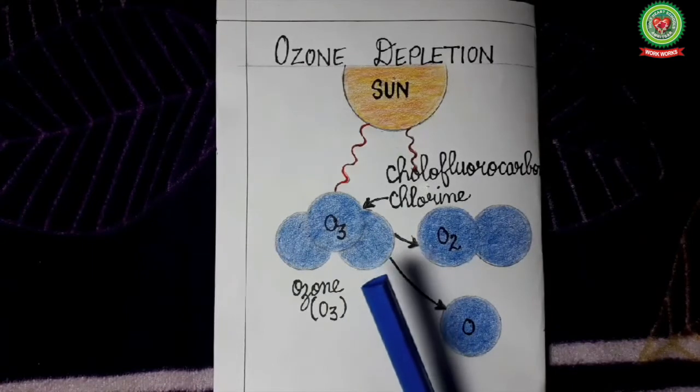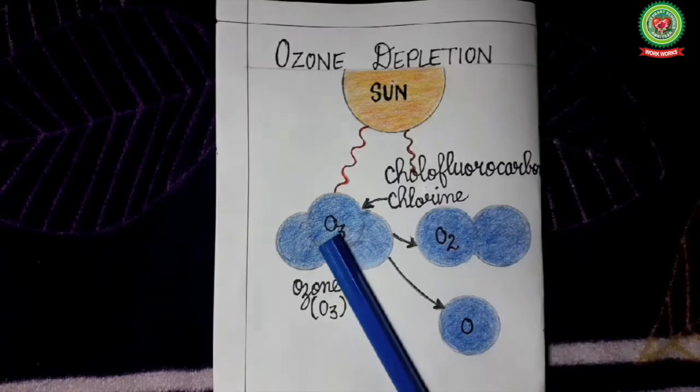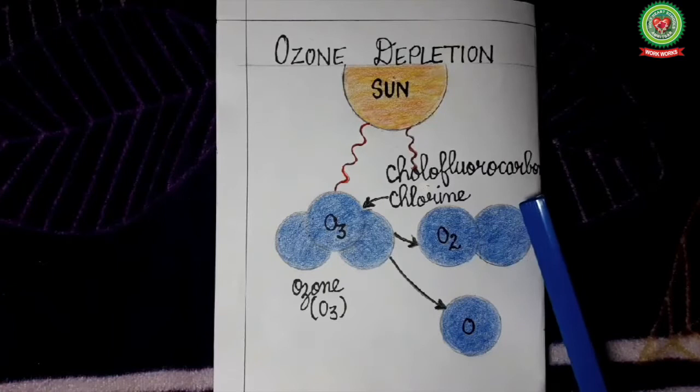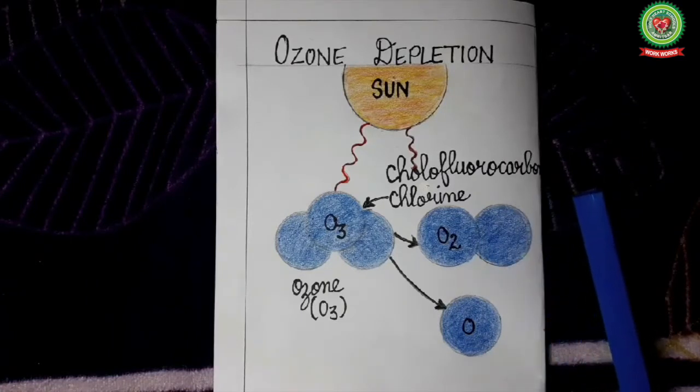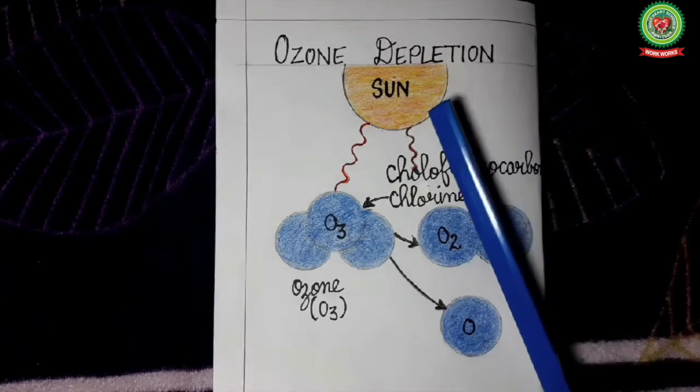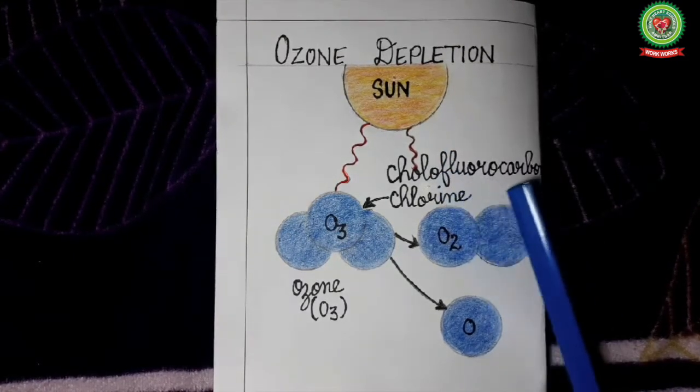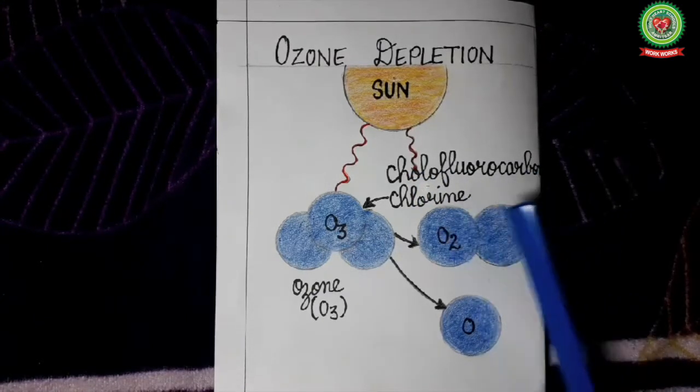Ozone can protect us from ultraviolet rays because it absorbs the harmful ultraviolet rays coming from the sun. But from the earth, chlorofluorocarbons are released from refrigerators, ACs, etc. When the ultraviolet rays strike with the chlorofluorocarbon, the molecules of chlorofluorocarbon break into chlorine, fluorine and carbon.